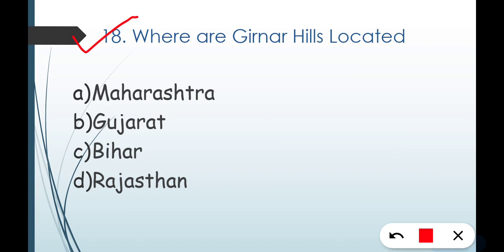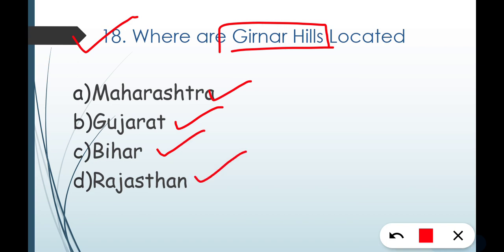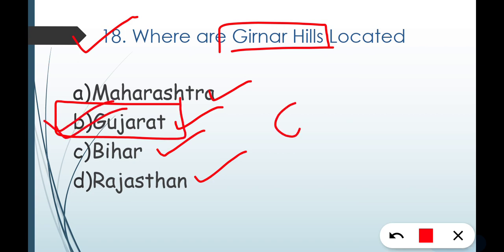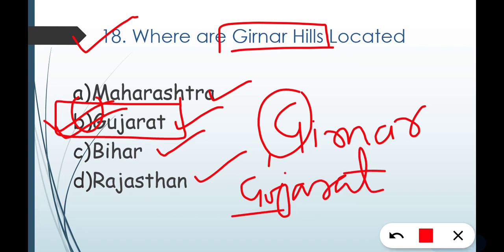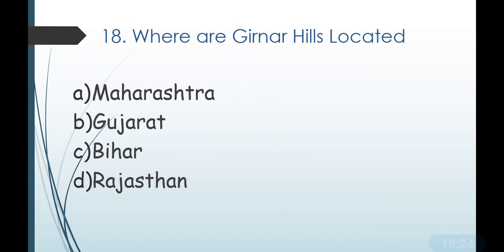Question number eighteen: where are Girnar Hills located? Options are Maharashtra, Gujarat, Bihar, or Rajasthan. The correct answer is Gujarat. Memory trick: G for Girnar, G for Gujarat — so Girnar is located in Gujarat.